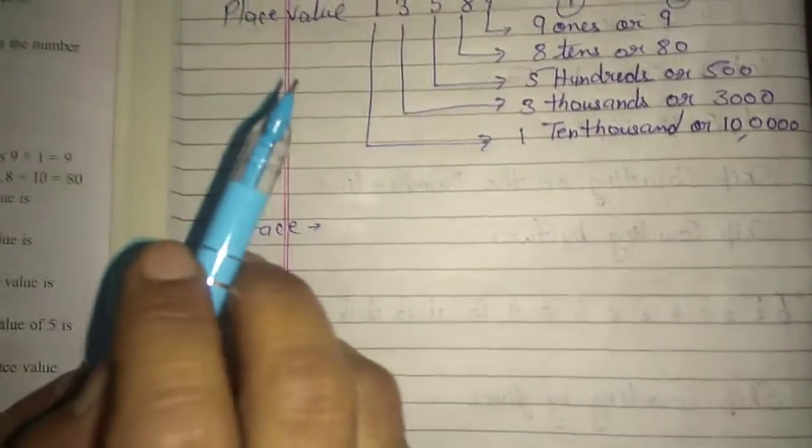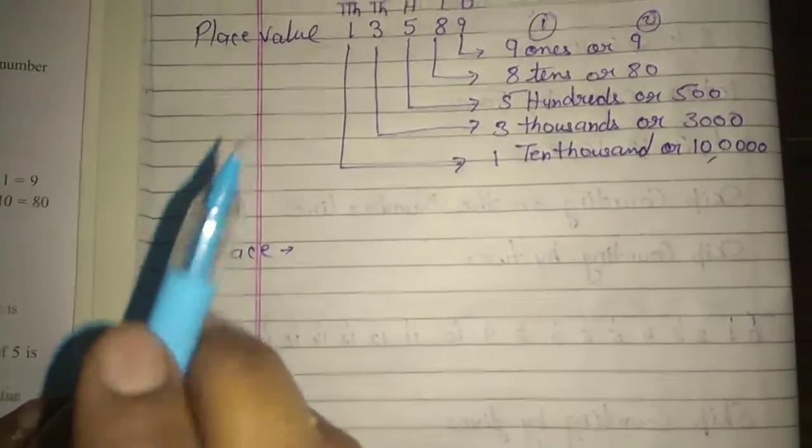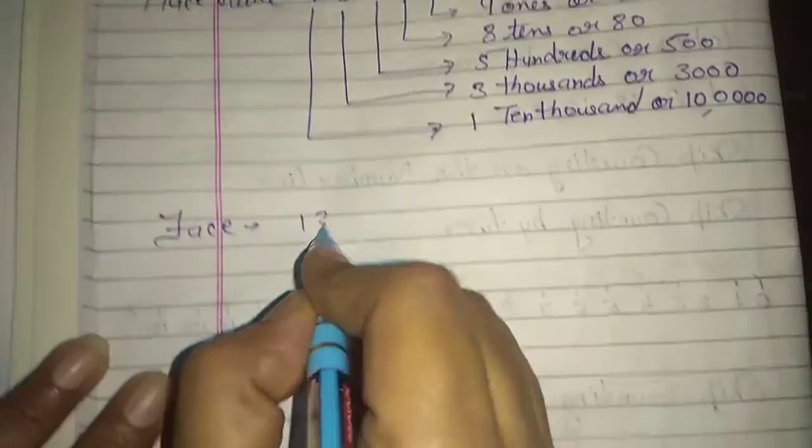I have told you this. The face value of digits is the digits itself. It says that we have had them. So, it's the same number.